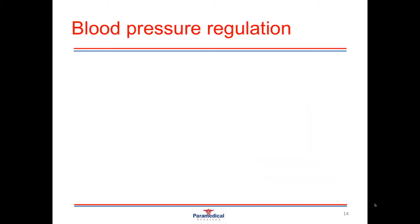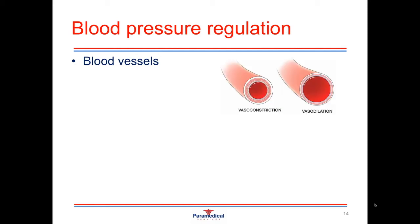Another very important homeostatic balance is the regulation of blood pressure. Blood pressure is primarily regulated through our blood vessels, and it's very important to maintain a good blood pressure. We need to maintain a certain amount of pressure within our blood vessels for red blood cells, oxygen, and nutrients to keep moving through our entire system. If blood pressure drops too low, somebody may faint because they don't get enough oxygen and blood to their brain and vital organs. If it's too high, it can cause damage to blood vessel walls and things like heart attacks and strokes.